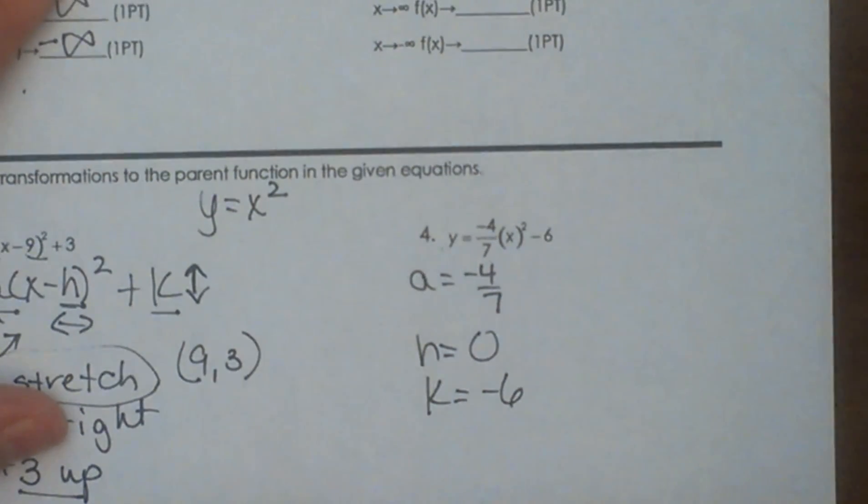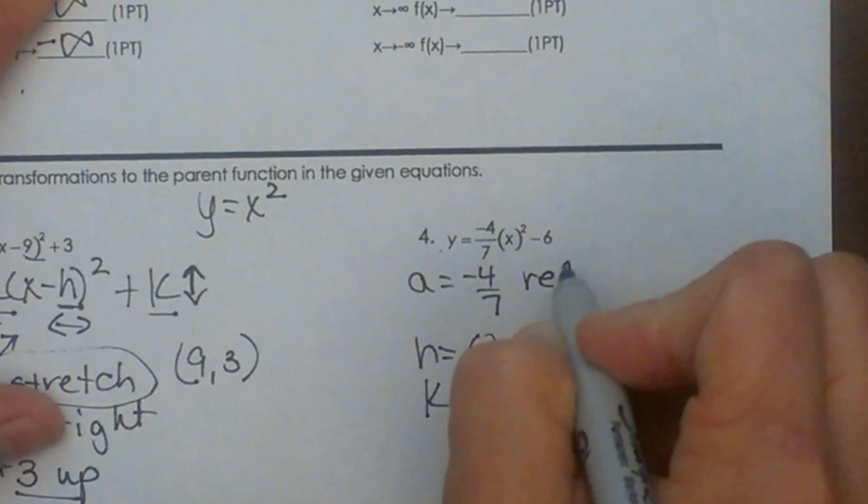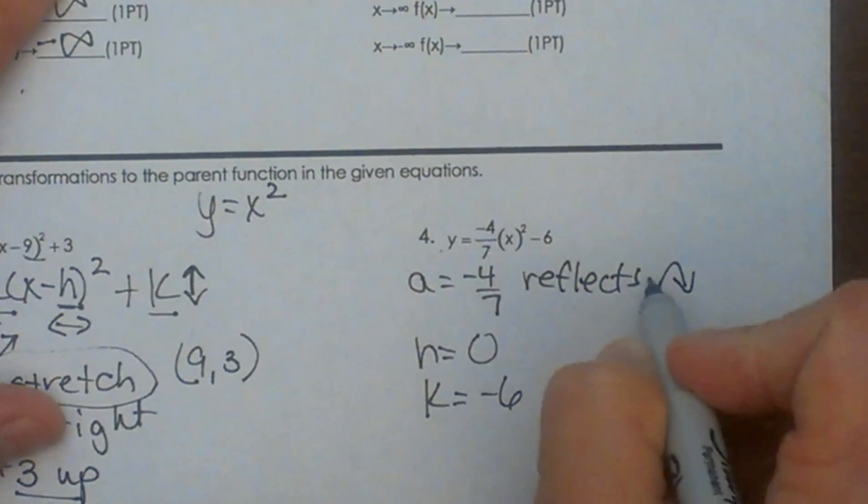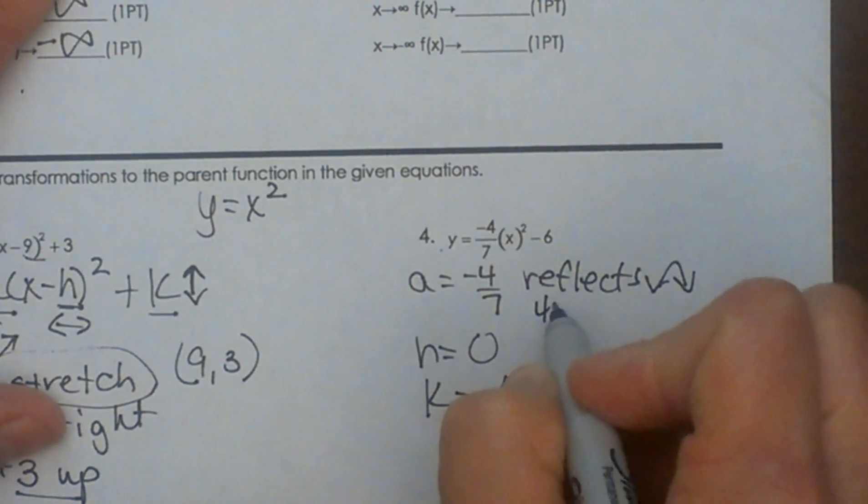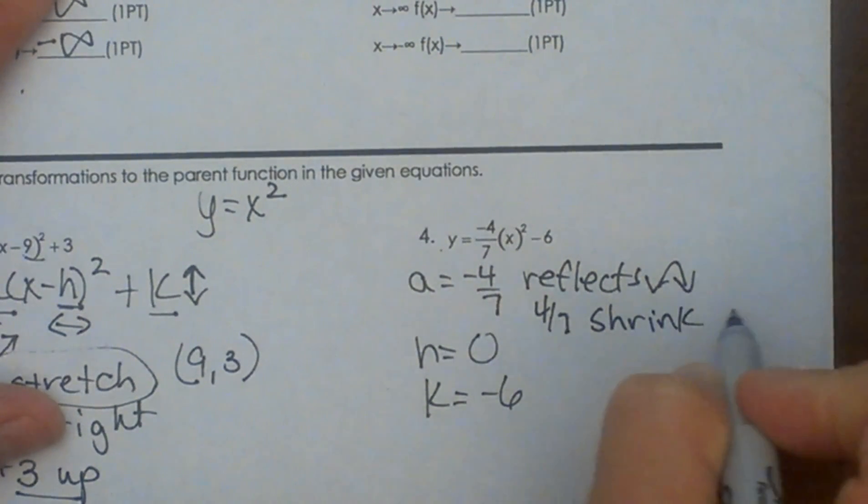So now let's apply our transformations. What does a negative do? Well, a negative reflects the parabola, so now it's a down-facing parabola instead of an up-facing parabola. 4 sevenths tells us that it shrinks, which means it's going to be a little bit fatter than the parent function.